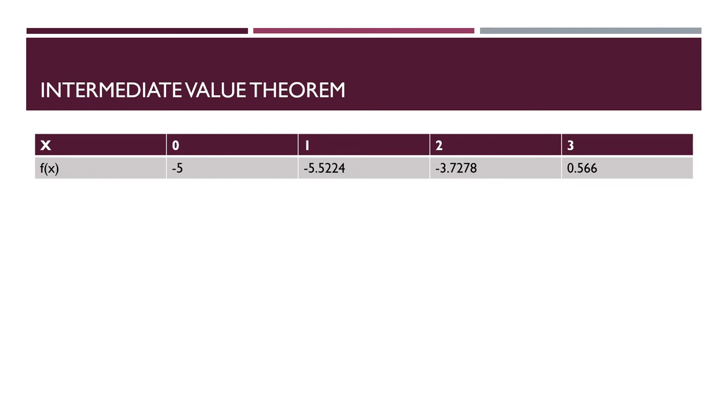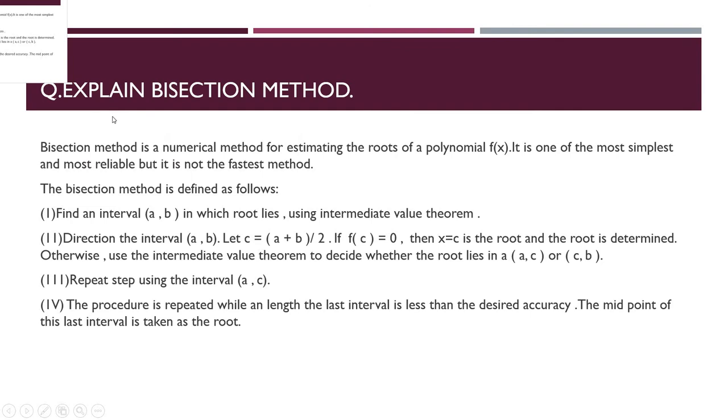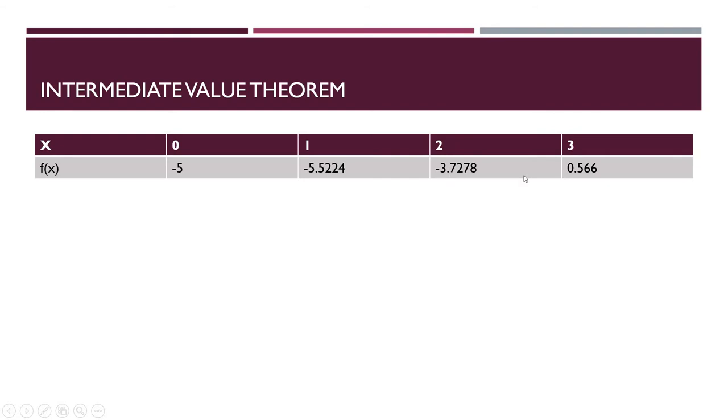Now let's go to the bisection method. It is a numerical method for estimating the roots of polynomials. It is one of the most simplest and most reliable but is not the fastest method. The bisection method is defined as follows: Find an interval a and b. This is a and b.